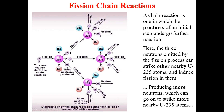The process continues: after the first fission we have three neutrons, which are accelerated toward three more uranium-235 nuclei and induce further fissions. Those three uranium-235 nuclei produce nine more neutrons, which are then accelerated toward nine more uranium-235 nuclei to induce still further fissions. This process continues until the uranium-235 nuclei are fully fissioned.